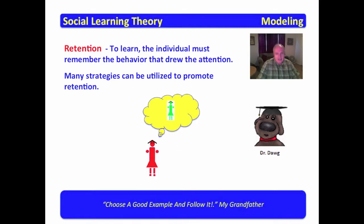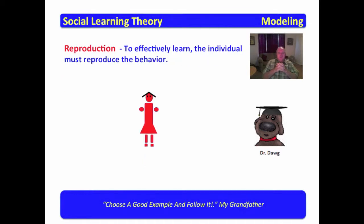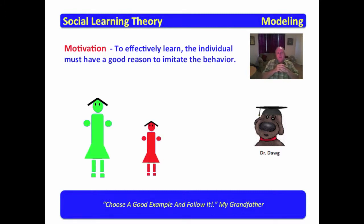The next is that of reproduction. To effectively learn, the individual must reproduce the behavior. You must get the observer's attention, you must help the observer retain what they have observed, but the next phase is to have them reproduce that behavior. And by reproducing it, then it becomes ingrained in the observer.